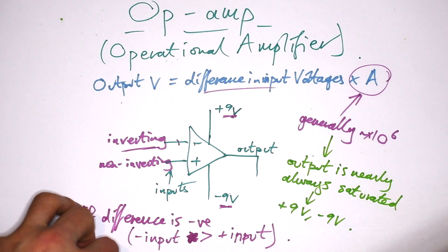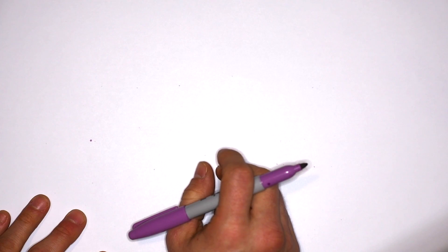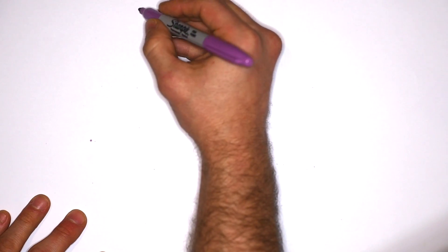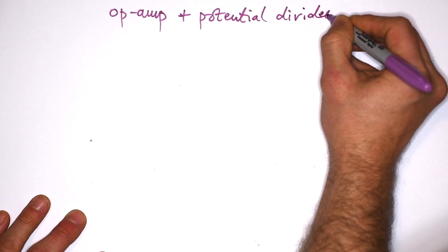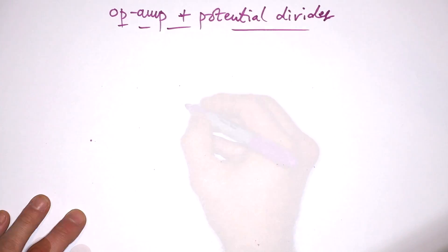So what kind of circuit can we use this in? Let's have a look. Like I said, op amps can be used in all kinds of different situations, but generally, in your exams, you'll see them being used with potential dividers. And if you haven't seen my potential divider video, then click on the link in the description, and it'll take you to that.